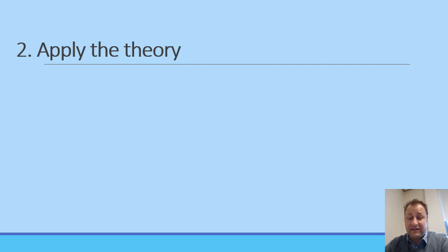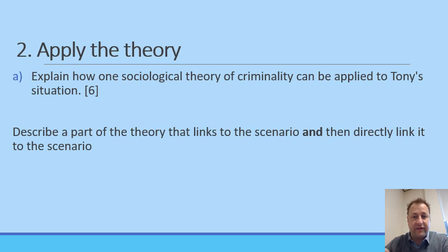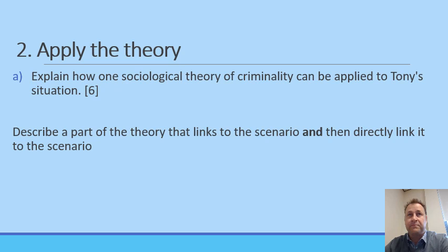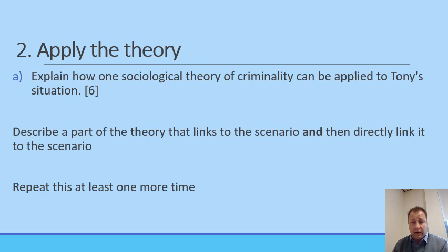The second question type is applying the theory — we've done at least one of these in class. For example: 'Explain how one theory of criminality could be applied to this scenario.' There are two things you have to do: first, describe the theory, then link it to the scenario. For instance, with social learning theory you'd say people could copy role models, and this could be seen in Tony's situation because his mother also did this crime. Questions are around six marks, so you'd need to do this at least two or three times.